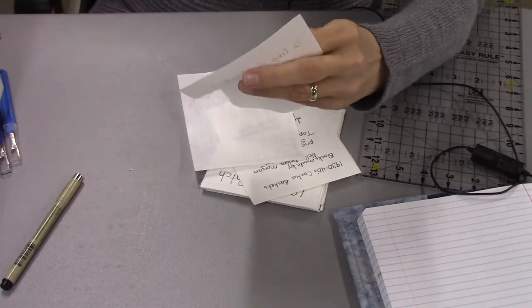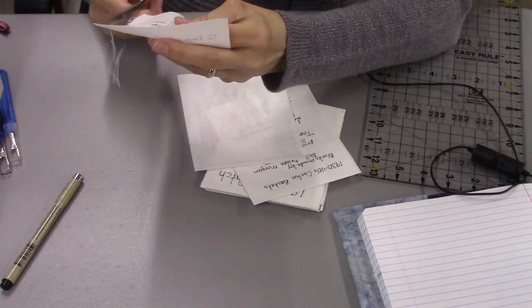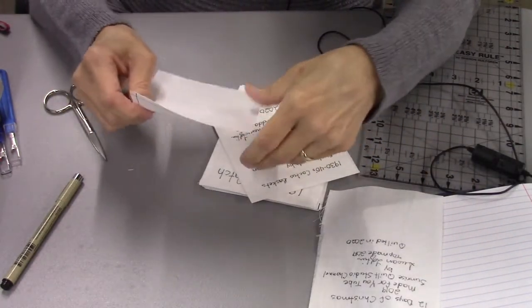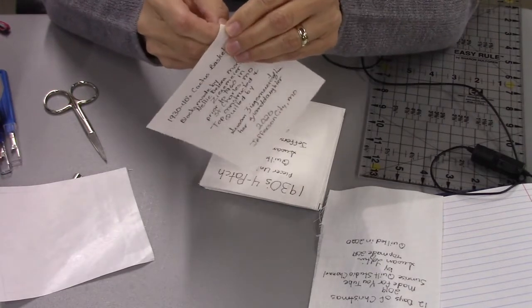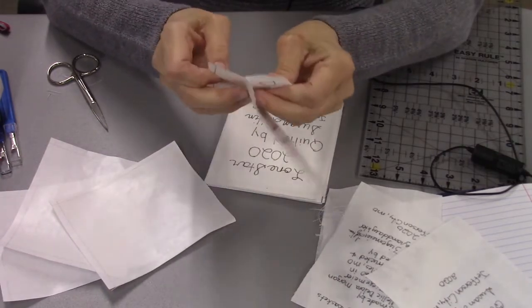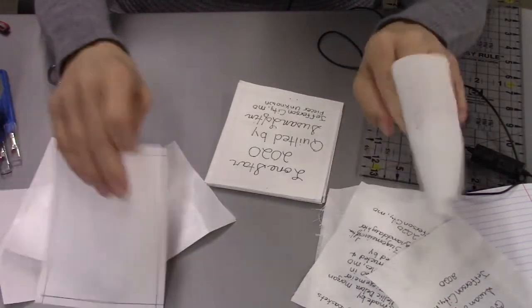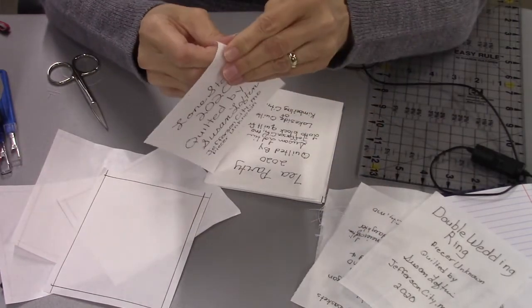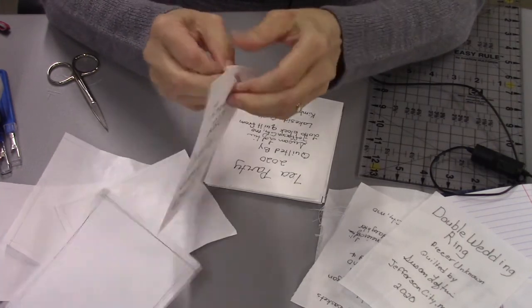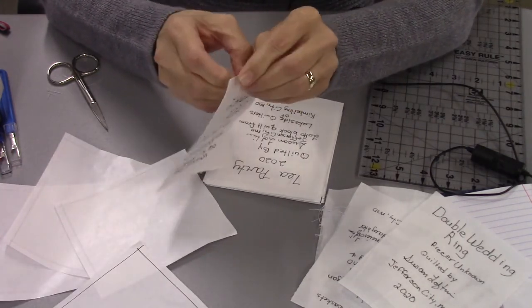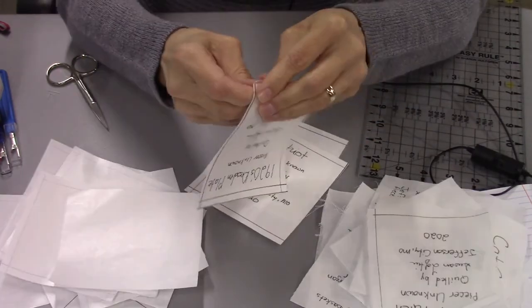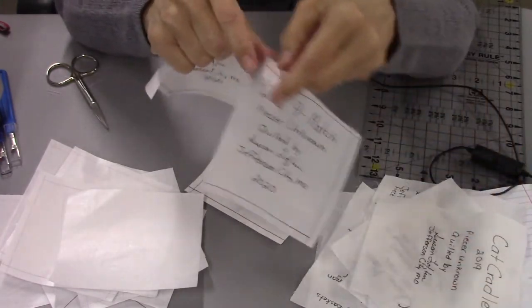I've got my list done, so now I can cut these apart. I'm just going to take these to my rotary mat and cut along the center line. Okay, I have all my quilt labels now. All I need to do is peel off the backing, which is the freezer paper. That shouldn't be too difficult. Yeah, there we go. Just have to peel it off.